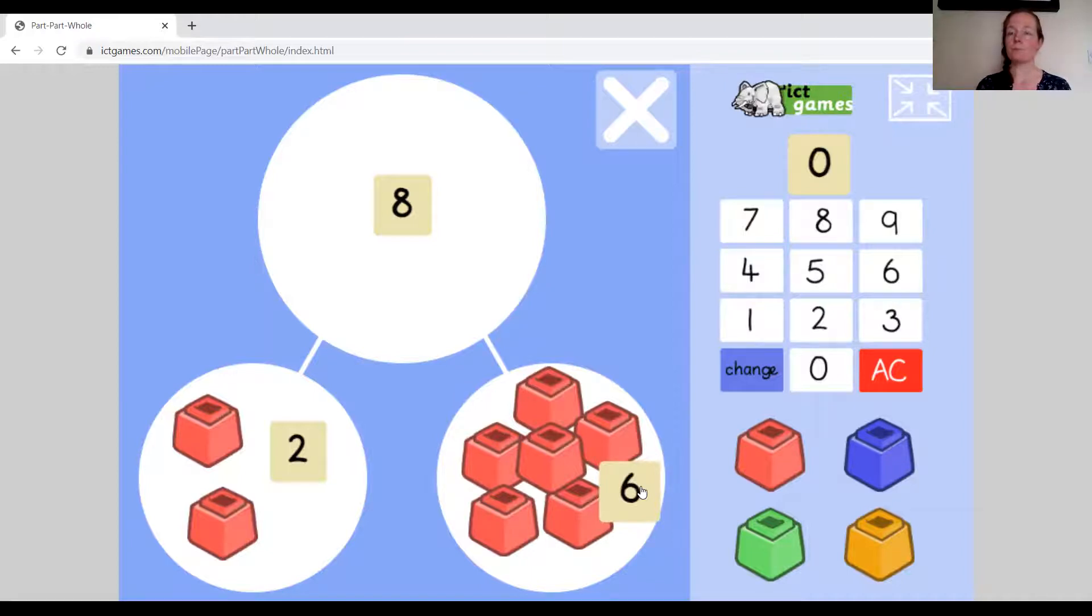Okay, so we've got two and we've got six. And what does that tell us? Yep, one part is two, one part is six, and the whole is eight. Or two and six makes eight.